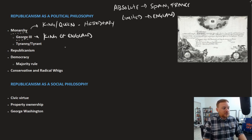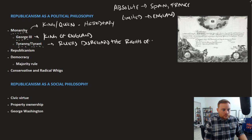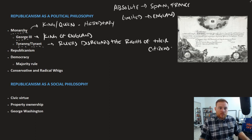The colonists believed that George III had become a tyrant, or that he was practicing tyranny. Tyranny is when rulers disregard the rights of their citizens — not just failing to protect them, but actually encroaching upon them. That's essentially what the colonists believed George III had done.